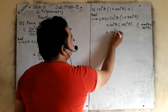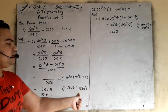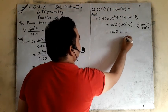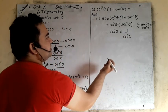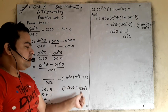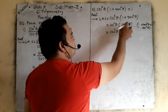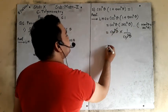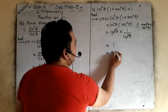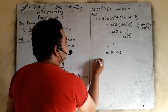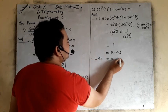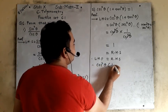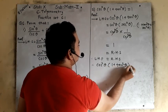Now we know that sec theta equals 1 upon cos theta, so sec square theta equals 1 upon cos square theta. Therefore the expression becomes cos square theta multiplied by 1 upon cos square theta. The cos square theta in the numerator and denominator cancel out, leaving 1. That equals the right hand side. Therefore LHS equals RHS, proving cos square theta multiplied by (1 plus tan square theta) equals 1.